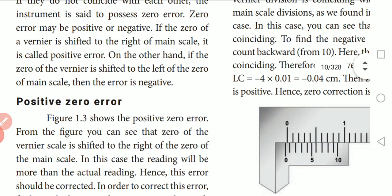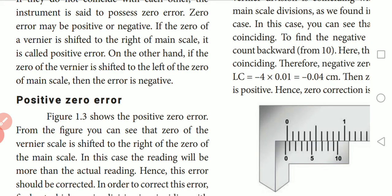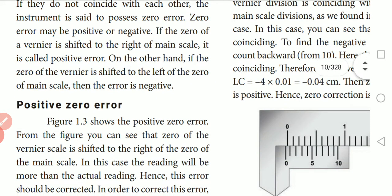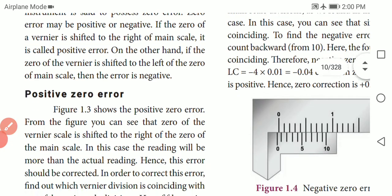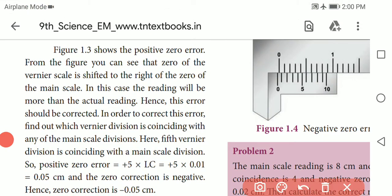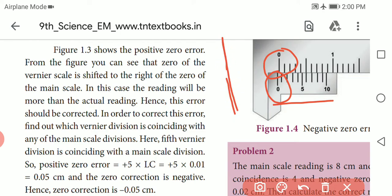These are the main scale readings. Let's see in the diagram. The diagram shows the main scale reading — the upper part and the lower part of the main scale reading. There is no zero error in this case.